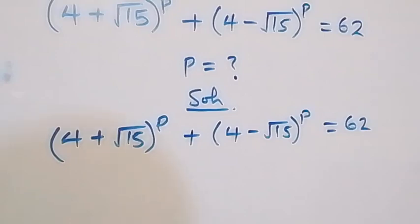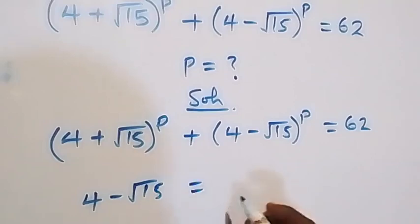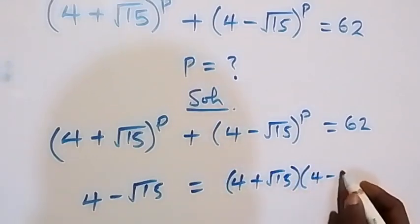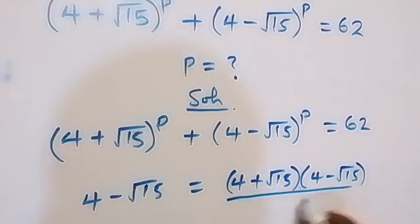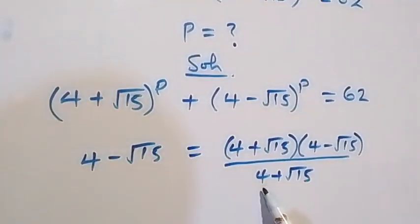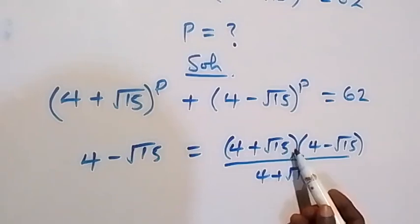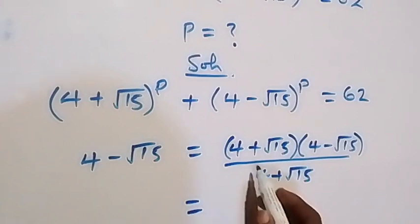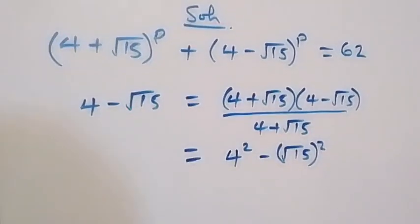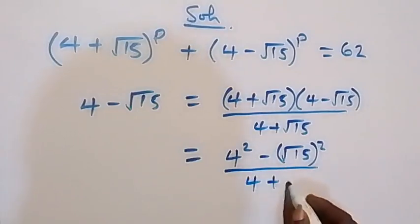Now, from here, let's rewrite (4 minus root 15). That can be written as (4 plus root 15) multiplied by (4 minus root 15), divided by (4 plus root 15). We can cancel out (4 plus root 15), and from here we can rewrite (4 plus root 15) times (4 minus root 15) as 4 squared minus root 15 squared, divided by (4 plus root 15). This applies the identity (a plus b)(a minus b) equals a squared minus b squared.